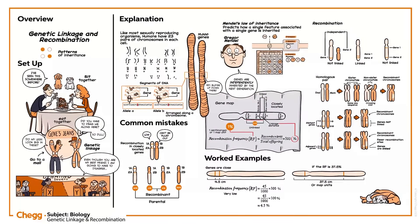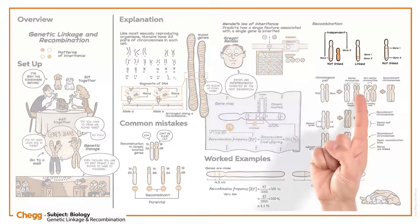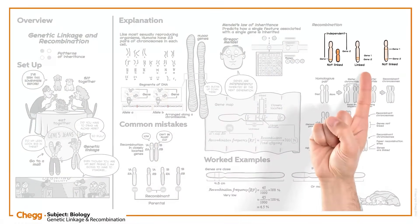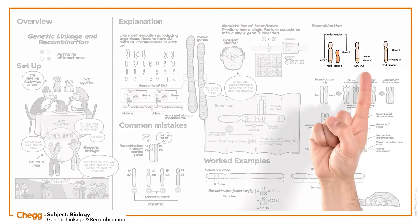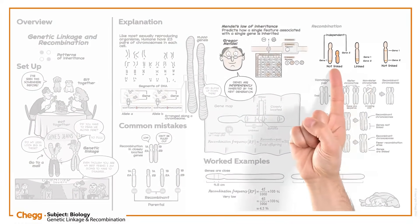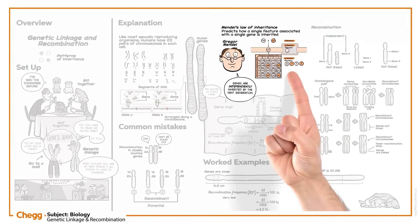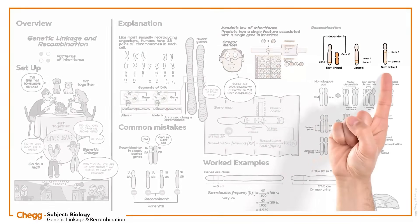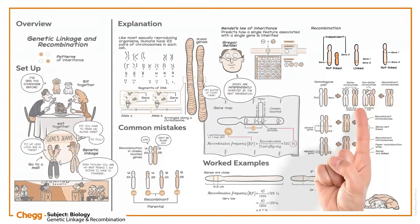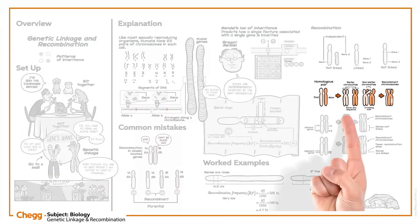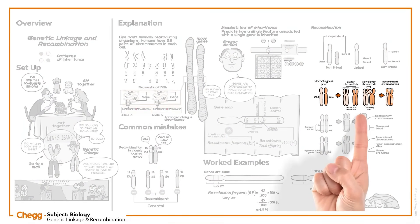In this video, we have learned that genes that are closely located are likely to be inherited together due to linkage. Only distantly located genes follow Mendel's Law of Independent Assortment. Recombination of genes happens due to the crossing over of paired homologous chromosomes.